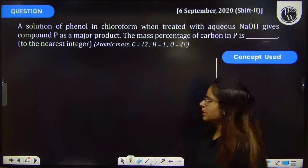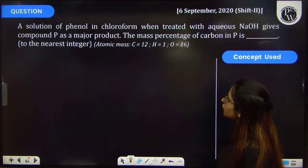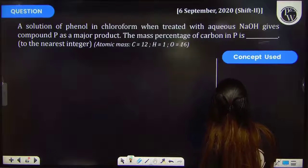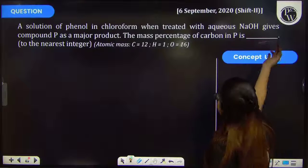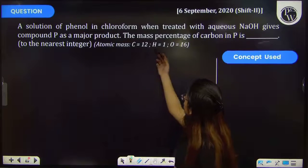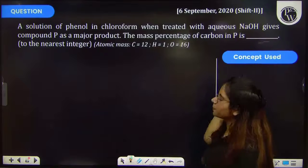Let's see this previous year question. The question says that a solution of phenol in chloroform when treated with aqueous sodium hydroxide gives compound P as a major product. The mass percentage of carbon in product P is?